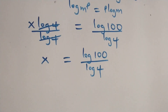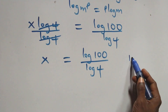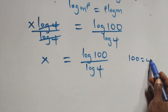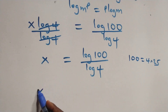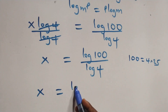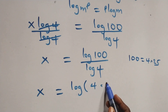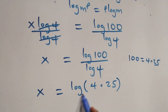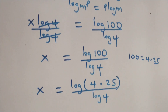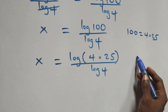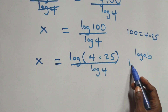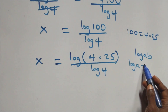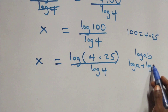Then, next step: we can write 100 as 4 times 25. This becomes x equals log(4 times 25) over log 4. Then, this follows by the logarithm rule: when we have log(a times b), this is the same as log a plus log b.